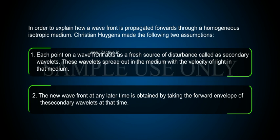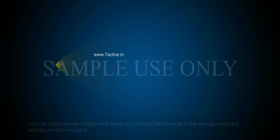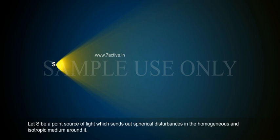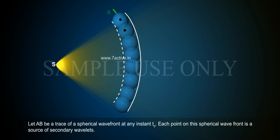Second, the new wavefront at any later time is obtained by taking the forward envelope of the secondary wavelets at that time. Let S be a point source of light which sends out spherical disturbances in the homogeneous and isotropic medium around it. Let AB be a trace of a spherical wavefront at any instant t0.